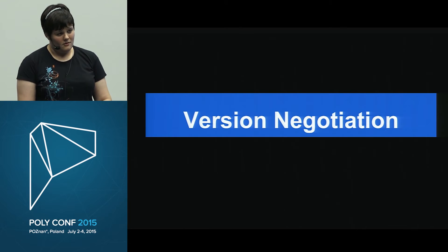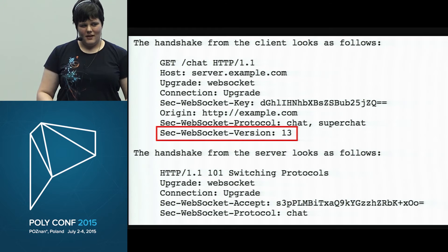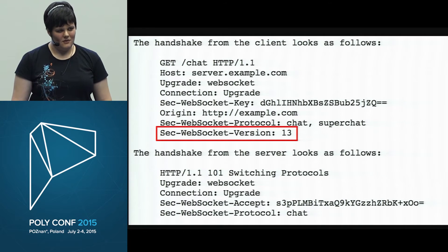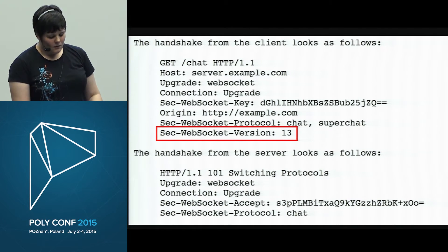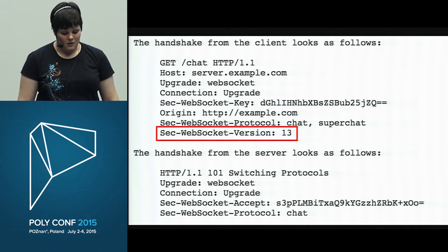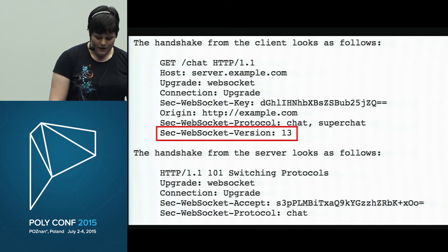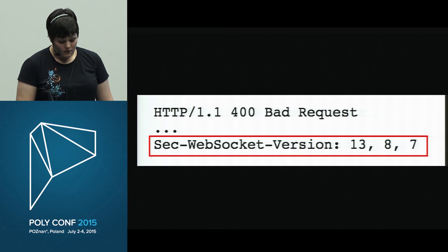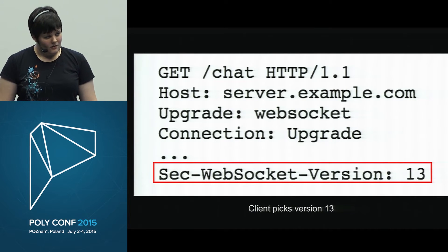Now the negotiation part — we're negotiating a version. Currently there's only one valid version of WebSockets: version 13. All previous versions were drafts you're not supposed to use. The RFC does include what happens when we get more versions. For example, if a client asks for version 25 and the server can't do that, it responds with 400 Bad Request and includes a header listing the versions it does accept. The client then starts over with one of those versions.